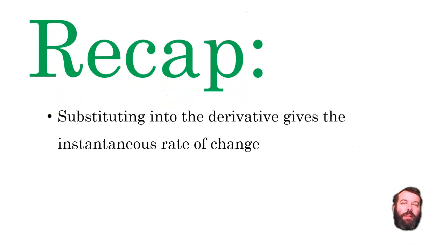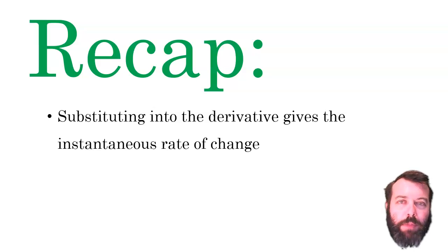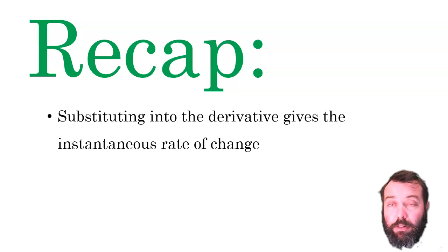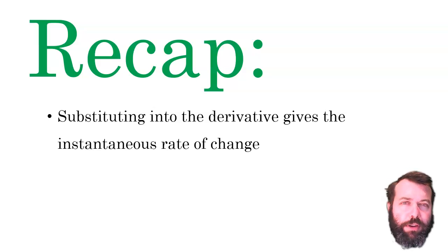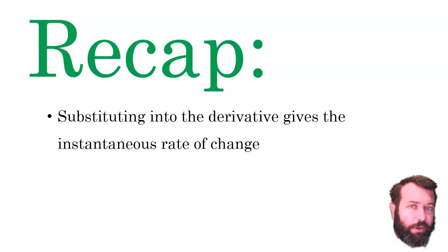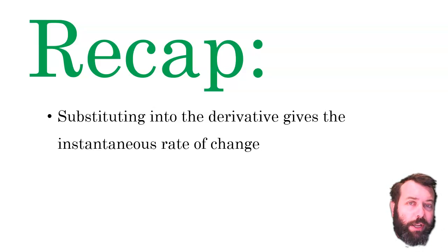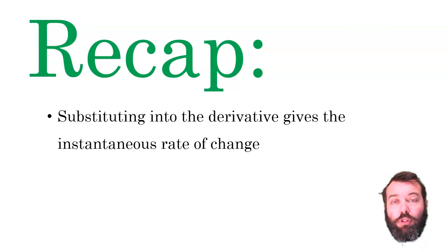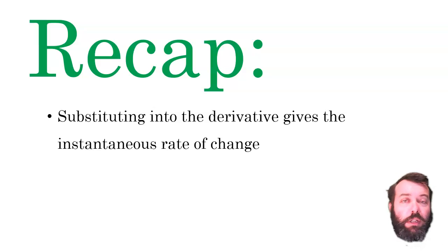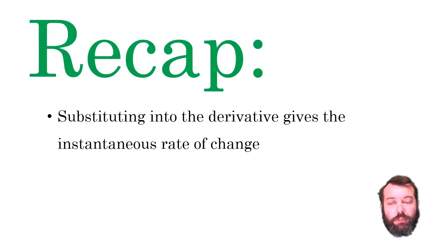That's it for the example and for rates of change for the time being. Remember to observe the difference between a function and its derivative. The derivative gives us the instantaneous rate of change, but substitute two values into the original function to get an average rate of change.